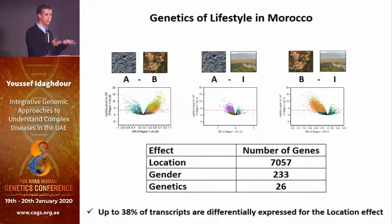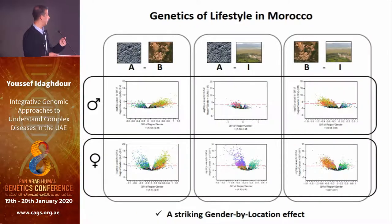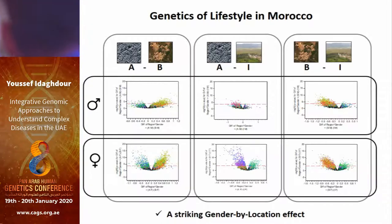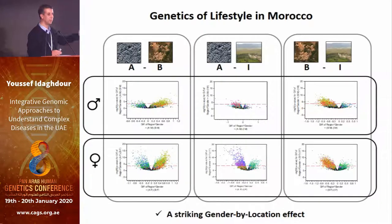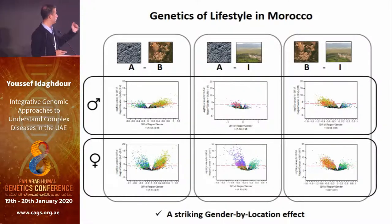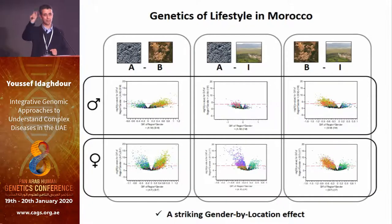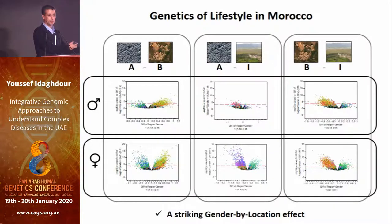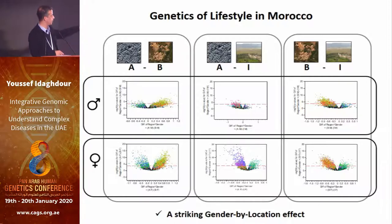What we did was stratify our samples based on male and female. When we looked at males in that comparison, we don't see a lot of differences. When we look at females, we see a lot of differences. This looks like a gender effect, but it's actually not. We had to go back, and what we figured out is that males in that village commute to the city during the day — it's about 20 kilometers. Just that makes their transcriptome similar to someone who lives in the city. So it's not a gender effect, but a clear environmental effect confounded with gender.